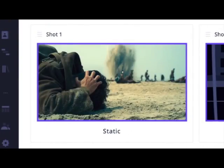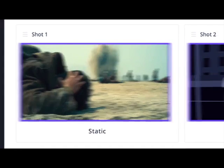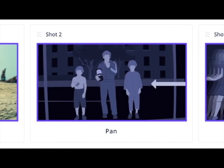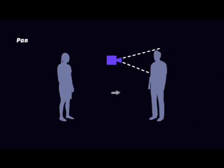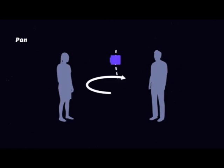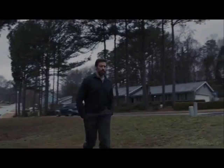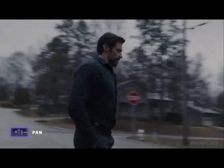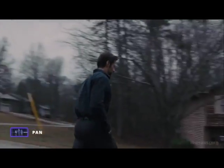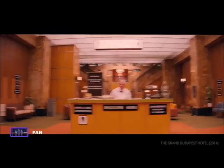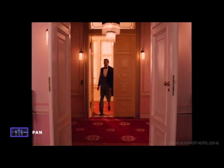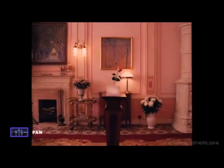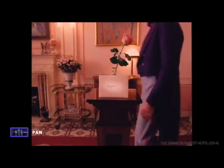Let's move on to our next camera movement: the pan. A pan rotates the camera horizontally — left or right — while remaining in a fixed location. Pans can be used to follow a character's actions, or be used to reveal information, which is something Wes Anderson does frequently.